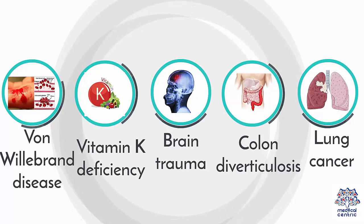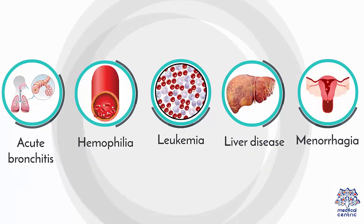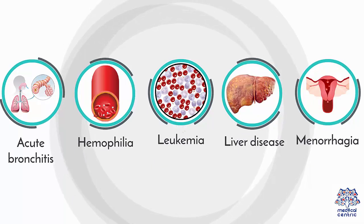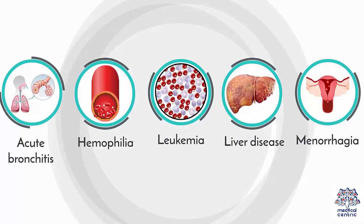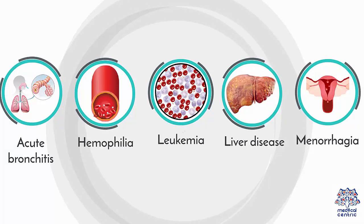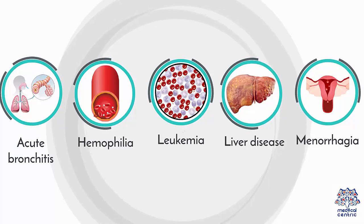Additional medical conditions that can cause bleeding include lung cancer, acute bronchitis, hemophilia, leukemia, liver disease, menorrhagia, and heavy or prolonged menstrual bleeding.